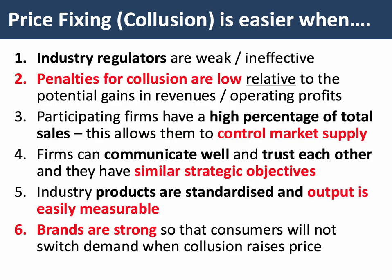Collusion is easier when the industry regulators are pretty weak or ineffective — regulatory failure can let cartels slip by. Collusion is also easier when the penalties for collusion are relatively low compared to the gains in revenue and higher profits. If you Google cartel price-fixing fines, you'll find lots of examples of fines in the tens of millions of dollars or euros, but when you compare a 50 million euro fine to 500 million euros in revenue, the fine compared to the revenue and profits can be tiny. It's easy to collude when the penalties are pretty low.